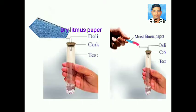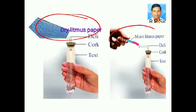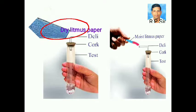Test the gas evolved successively with dry litmus paper and with wet litmus paper, that is moist litmus paper. You notice there is no change in color of dry litmus paper, whereas wet blue litmus paper turns red.